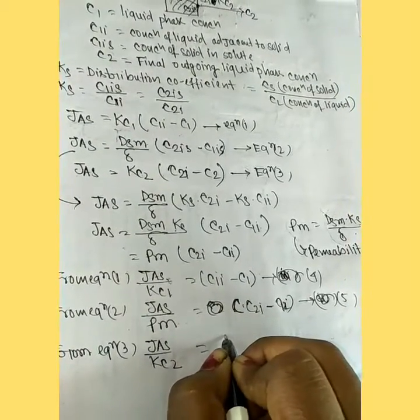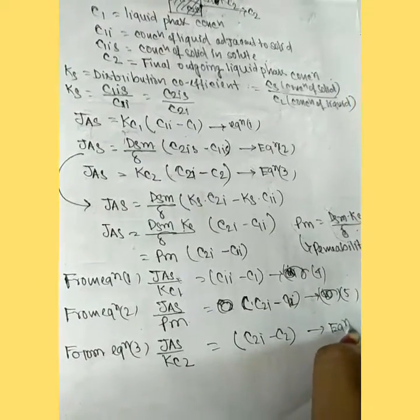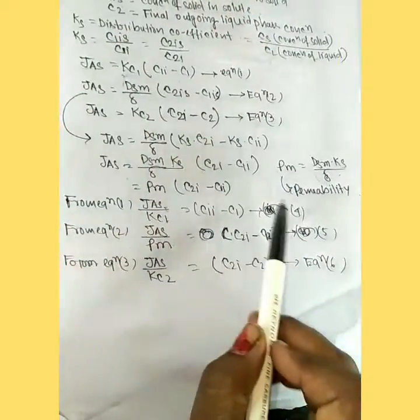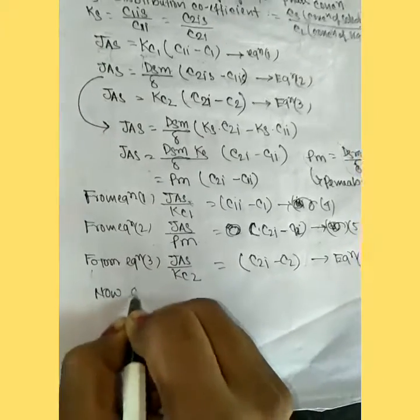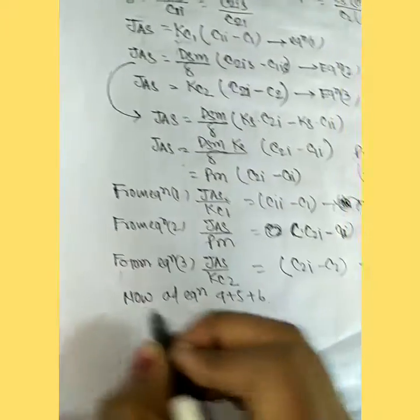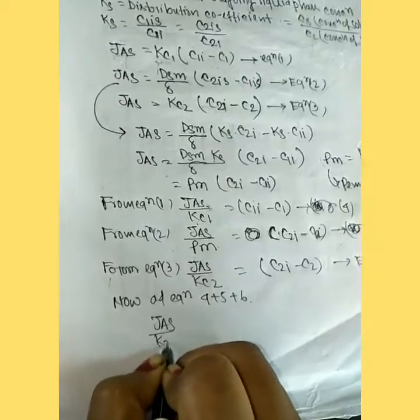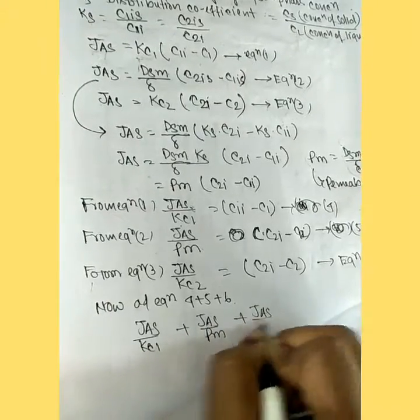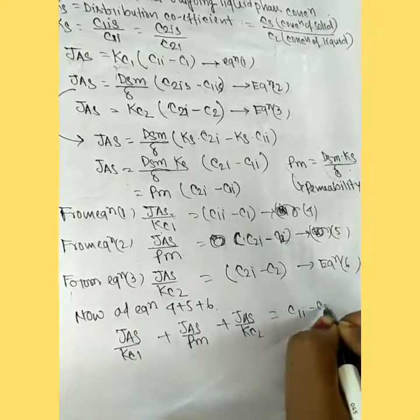Now add equation 4 plus 5 plus 6. It will be: JΔs/Kc1 + JΔs/Pm + JΔs/Kc2 equals C1I - C1.